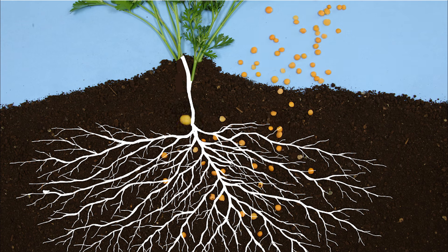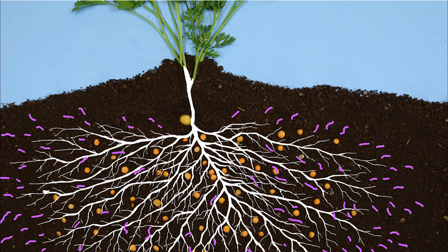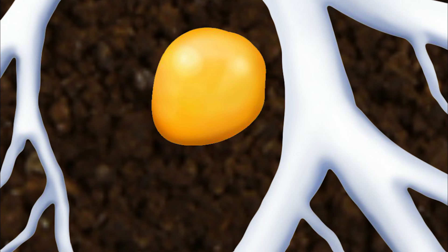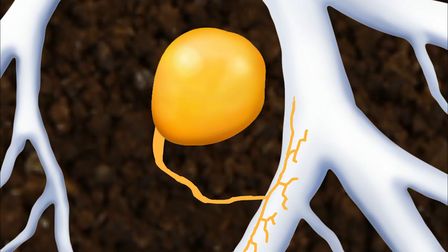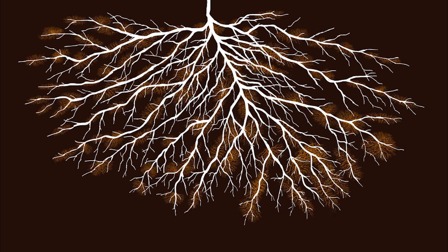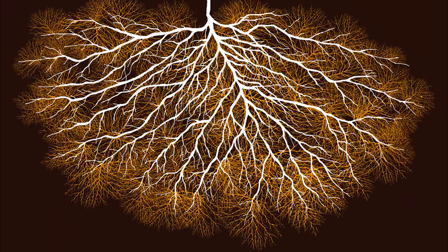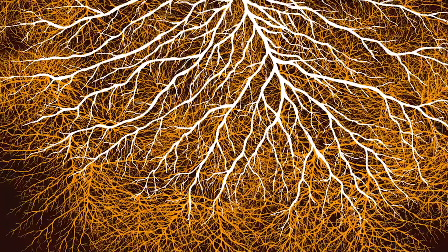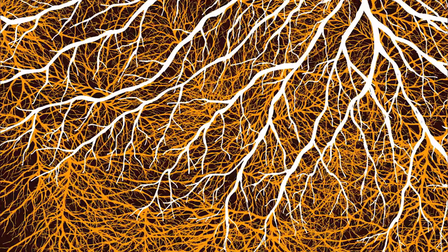Now, let's introduce some mycorrhizal spores. The plant sends signals out to any mycorrhizal fungi in the area, and the spores respond by growing hyphae in the direction of the signal. If a spore is able to find the root of the plant, the hyphae will penetrate the root and begin to grow structures that allow for the plant and the fungi to exchange resources. The mycorrhizal fungi will then begin to grow an extensive cotton ball-like mass that will give the plant access not only to the nutrients and water outside the reach of its roots, but, since the hyphae are so small, they can access nutrients in the small spaces between the roots as well.